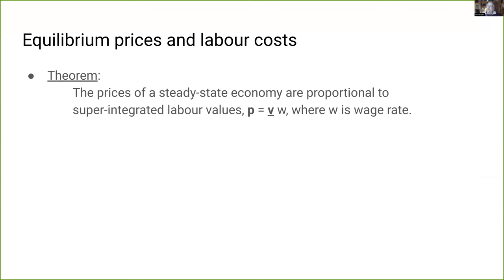That means prices of production can change if capitalists extract more or less profits from the economy even when classical values don't change at all. So Marx's aggregate conservation equalities can't hold, and there has to be a transformation problem. The conceptual error is to expect that prices induced by the institutional conditions of a capitalist economy can perfectly correspond to values induced by purely technical conditions of production — it's like comparing apples with oranges.